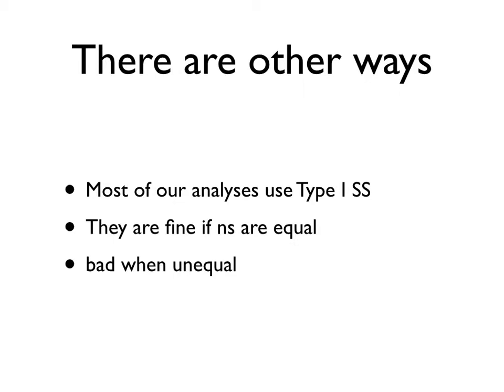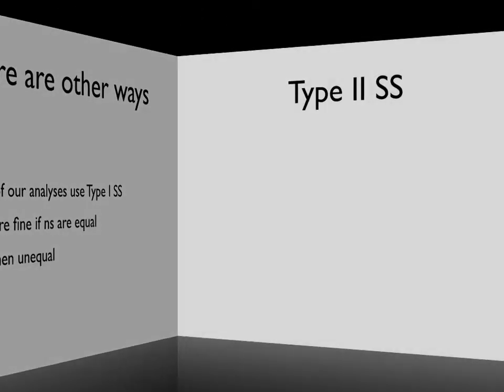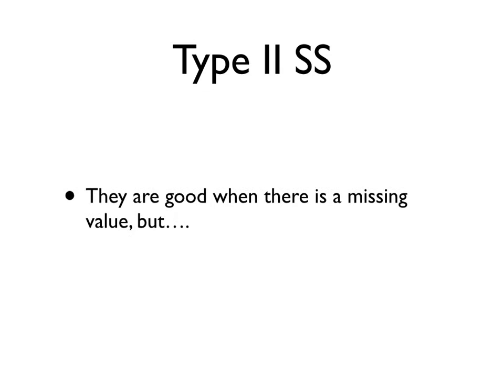It stops working so well when they're unequal, and it gets worse and worse the more unequal the n's are. So the more the number of subjects per cell diverges from each other, the worse it gets. So where's type 2, of course? They're good when there's a missing value. They really are.